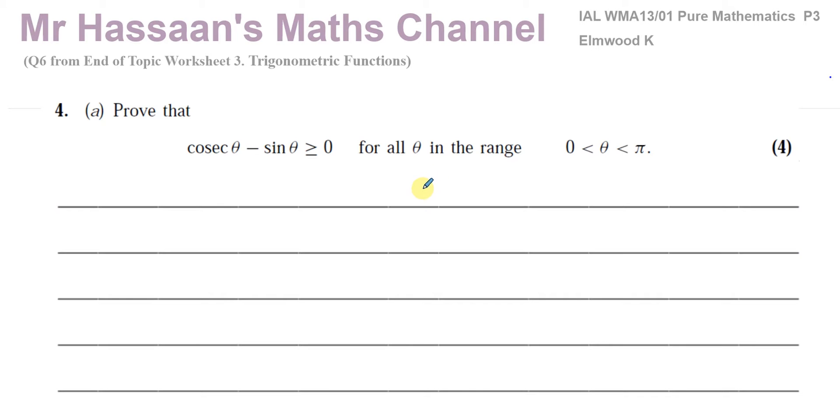And for this question, for part A, is prove that cosec θ minus sin θ is greater than or equal to 0 for all θ in the range of θ between 0 and π. So it's another proof type of question. We've got to take this expression and show that it's always going to be 0 or greater than 0, and never be negative, basically.